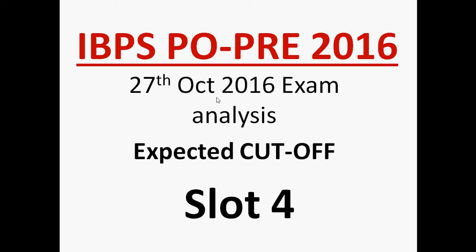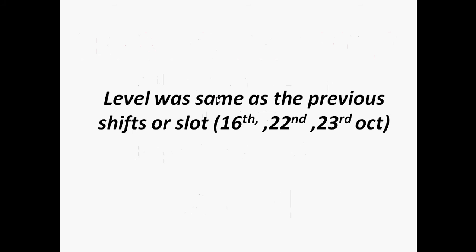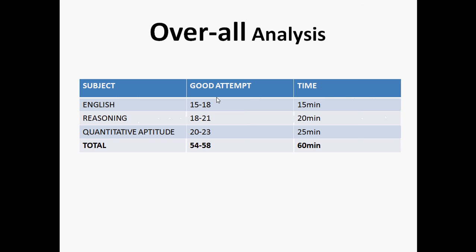analyze the exam and discuss the expected cutoff. The level of the exam was almost the same as previous shifts and slots. Here you can see the overall analysis of the exam. In English, 15 to 18 attempts are good. In reasoning, 18 to 21 are good. In quant, 20 to 23 are good. Overall, if you have attempted 54 to 58, then it is a good attempt.